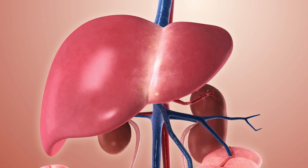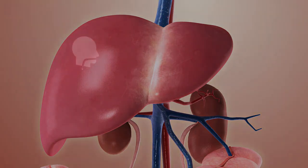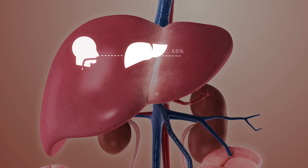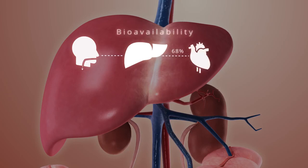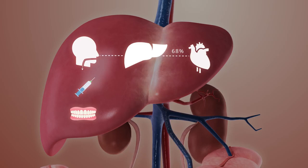A lot less of the aspirin will continue its journey onto the rest of the body, including the site of the pain. Only 68% of orally taken aspirin will have any effect at all, because of all the filtering that the body has done. This percentage is called the drug's oral bioavailability. If drugs are not administered orally — e.g. intravenously or buccally — then they can bypass the small intestine and liver, so none of this filtering takes place and they have 100% bioavailability.